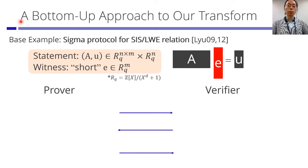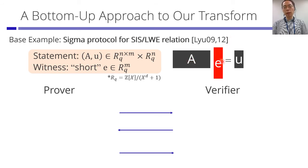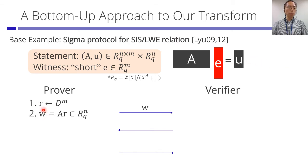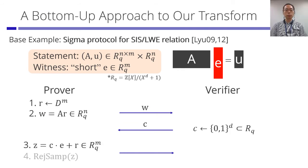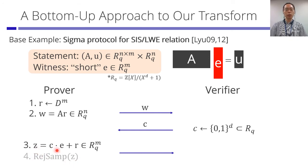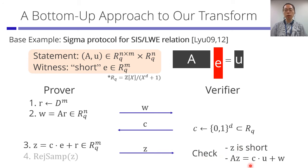We'll explain our idea in a bottom-up approach, starting from the base example: a sigma protocol for the SIS or LWE relation by Lyubashevsky. Here we have matrix A and vector U, and the witness is a short vector E satisfying the relation. The prover samples a short vector R from a Gaussian distribution, creates vector W, and sends it to the verifier. The verifier samples a short challenge element from R_q and sends it to the prover. The prover sets Z = c·E + R, performs rejection sampling to maintain shortness of Z without revealing witness E, sends Z, and the verifier checks Z is short and the equation holds — essentially Schnorr's protocol in lattice language.